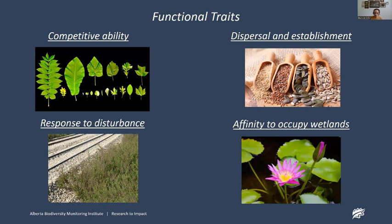We also have traits related to response to disturbance. Many people deal with dandelions in their gardens — they are quite resilient to disturbance. There is a gradient of how species respond: some can be really resilient, handle poor nutrients, or are really good at colonizing new habitat. So we have a suite of traits related to how species respond to disturbances. And lastly, we have traits looking at their affinity to occupy wetland — what's known as hydrophyte status. This is simply whether the plant species needs to be within a wetland to survive and thrive. Black spruce, for example, doesn't want to be in the water — it's near and around the wetland, so we wouldn't call it a hydrophyte. Other species, like lily pads, just need to be in the water to thrive.